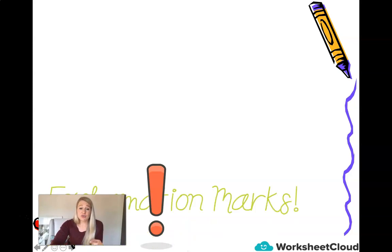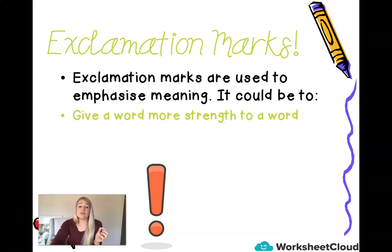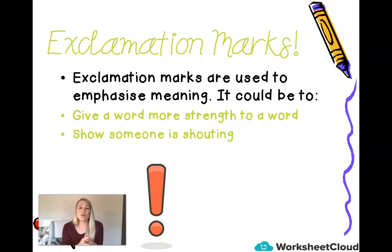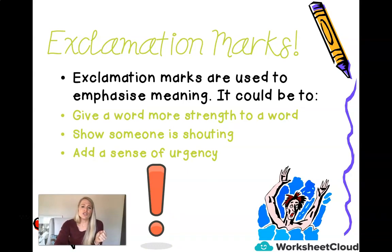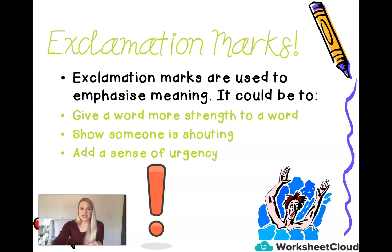And that brings me to the very last punctuation mark — our exclamation mark. I don't know if you noticed, I did raise my voice a little bit. Why? Because an exclamation mark is either to give strength to a word, making the word a little bit more powerful. We also use an exclamation mark to show that someone is shouting. And lastly, we can also use an exclamation mark to add a sense of urgency — if something is very urgent, we use an exclamation mark. It is a very important tool. When we have sentences that are like a loud instruction, we always use an exclamation mark. Help, help, help!